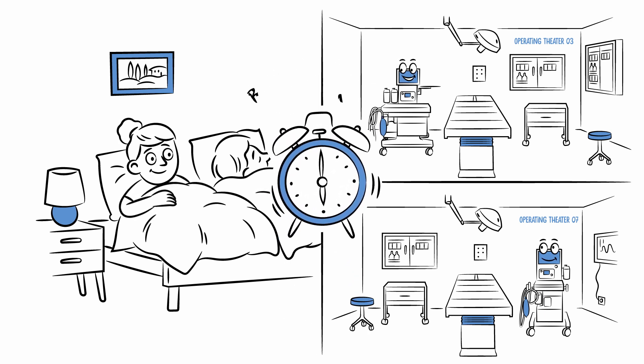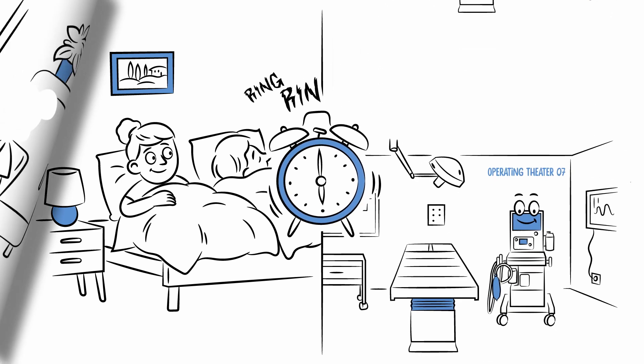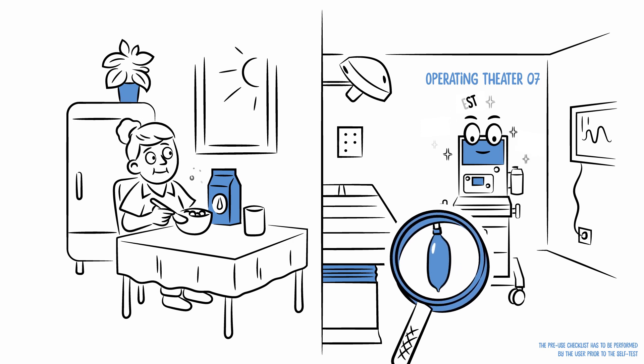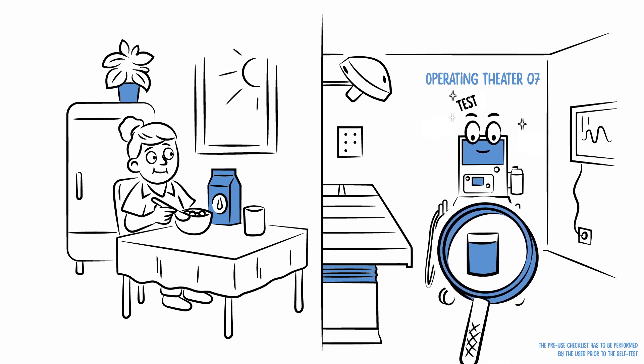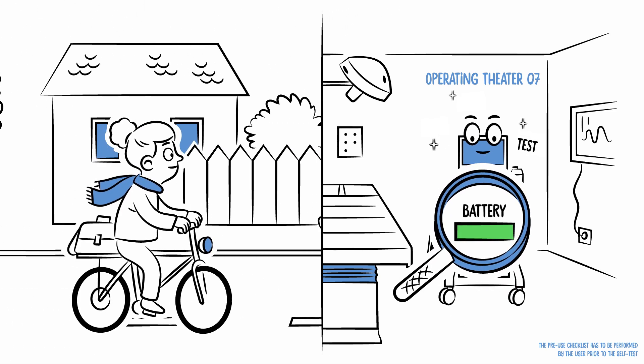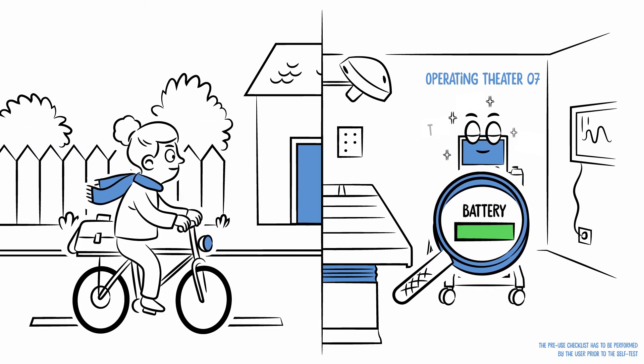The alarm clock goes off. While having breakfast at home, Atlan and Perseus are already performing the fully automated system self-test. Just like the alarm clock at home, with Auto-On, it can be programmed when the Atlan and Perseus should be ready to start.